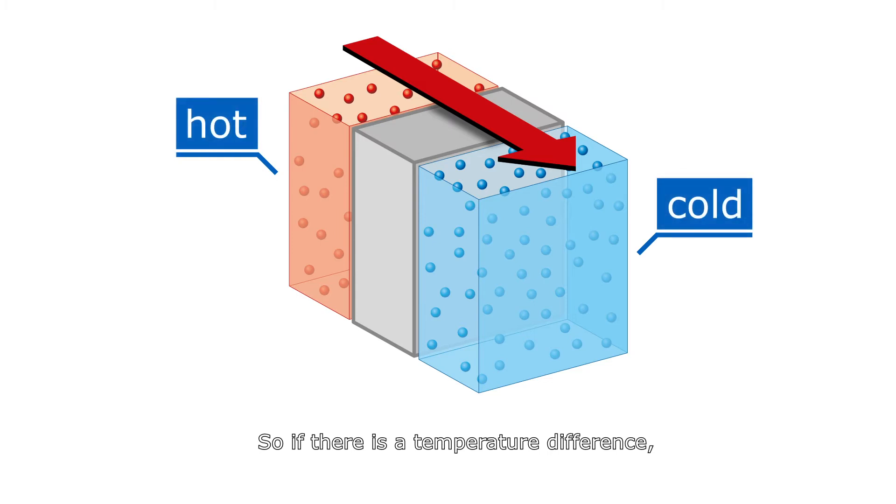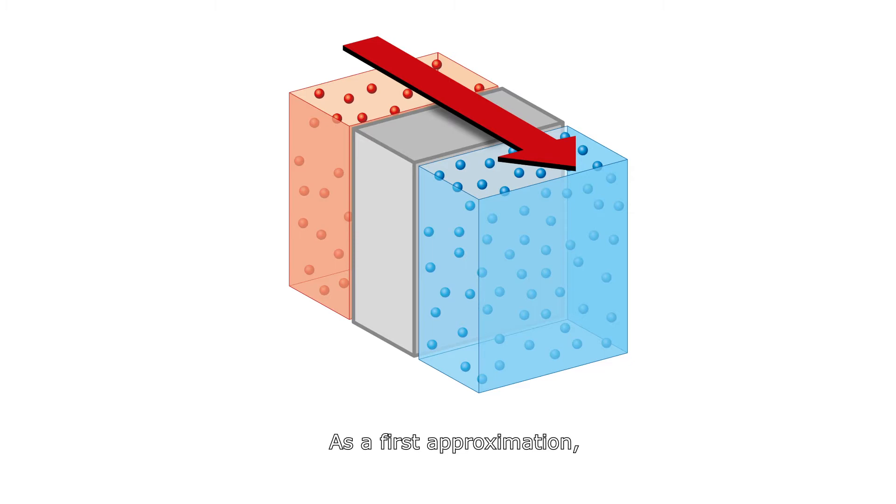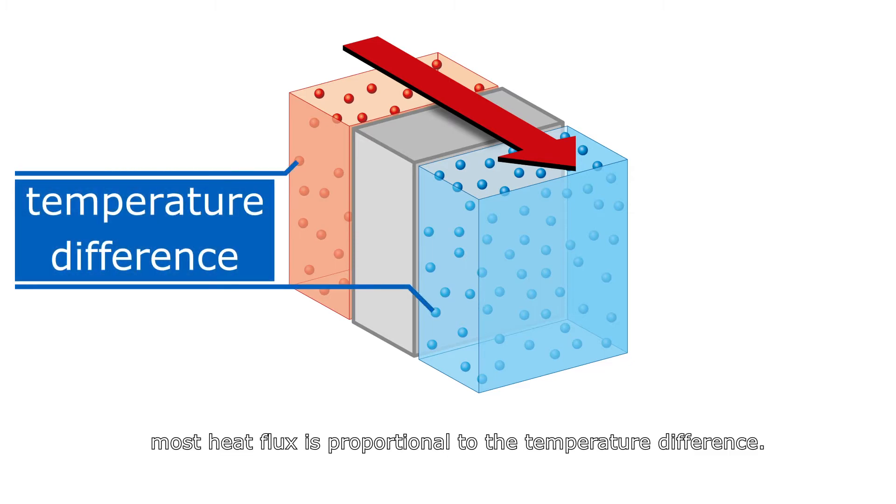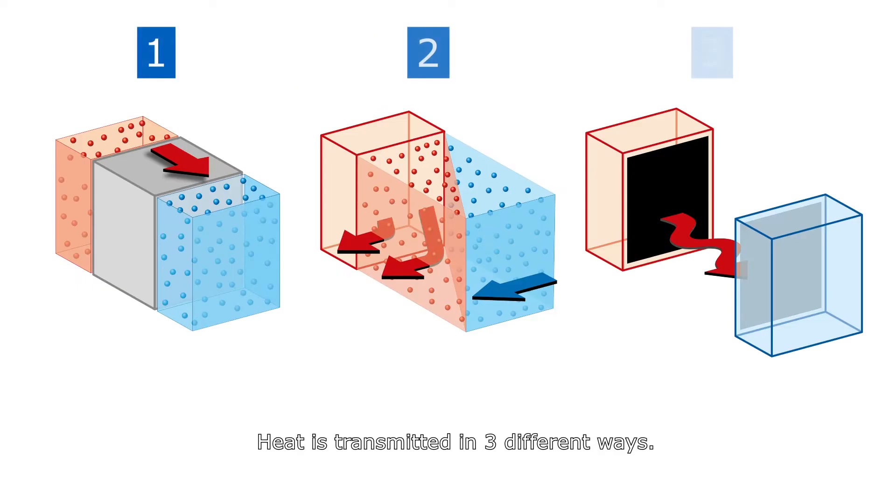So, if there is a temperature difference, heat starts flowing. As a first approximation, most heat flux is proportional to the temperature difference. Heat is transmitted in three different ways.